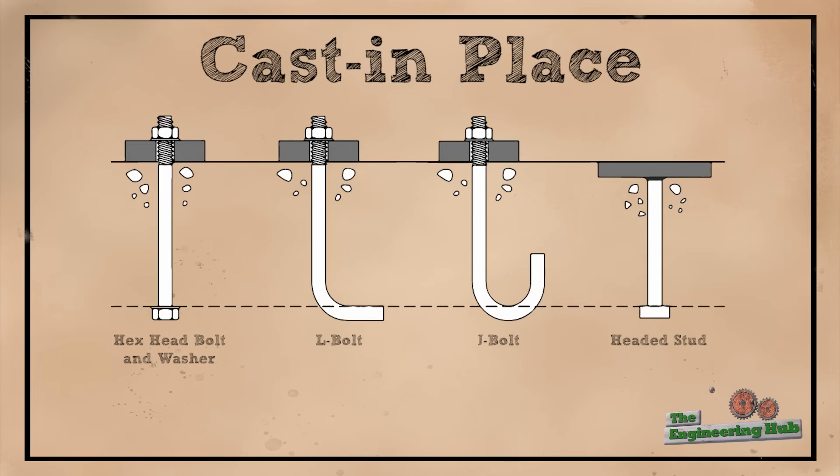Some examples of cast-in anchors are shown here. They generally involve a bolt or piece of rebar with some bearing-like element, such as a nut, head, or hook embedded in the concrete to grab onto more material.